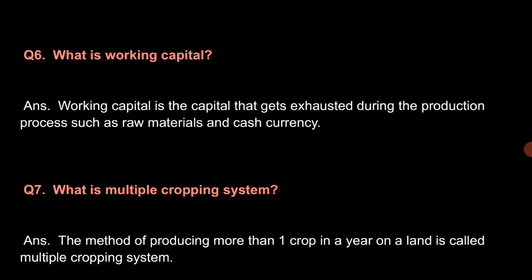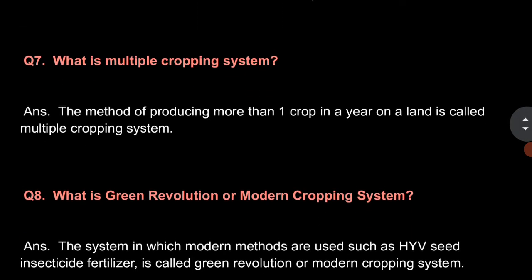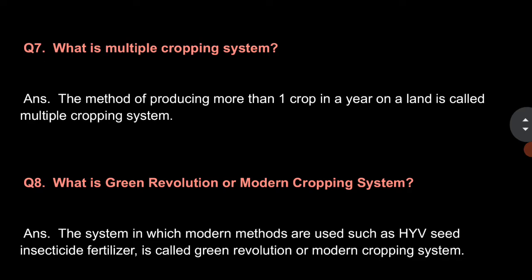Question No. 7: What is multiple cropping system? The method of producing more than one crop in a year on a land is called multiple cropping system.